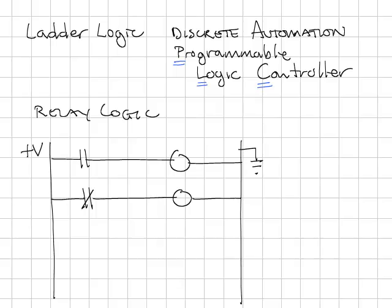This would say, if this sensor is on, when this sensor turns on, turn on this output. And you can see why it's called ladder logic, because you have these rungs that go across here and form what looks like a ladder.